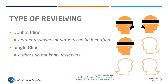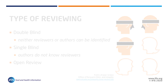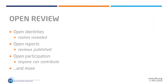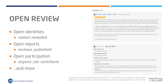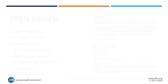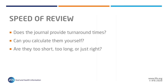A third form, becoming increasingly popular particularly among open access journals and platforms, is open reviewing. Open reviewing can take several forms: from names being revealed to authors in their decision letters, to review reports being published alongside the article, to platforms which enable the wider community to contribute comments, and other variations too.